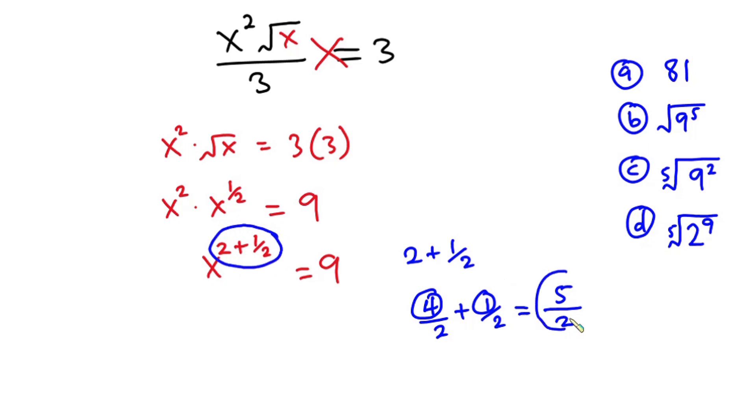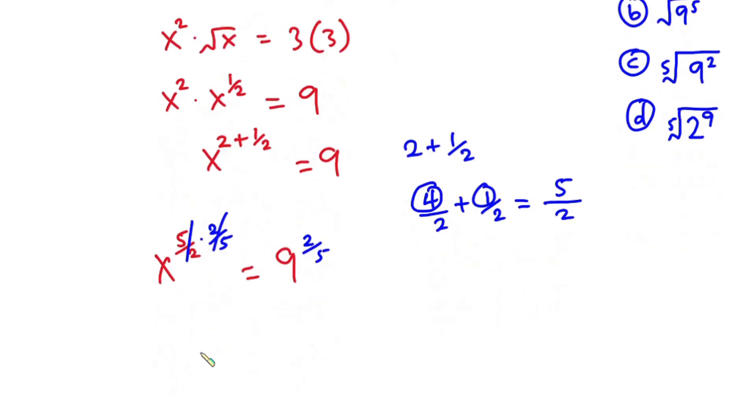So we have x^(5/2) = 9. Since we're looking for x, let's multiply the powers by 2/5. This 2/5 will cancel the 5/2, and we're left with x = 9^(2/5).